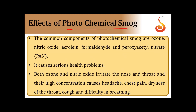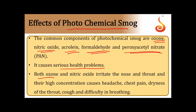The common components of photochemical smog are ozone, nitric oxide, acrolein, formaldehyde, and peroxyacetyl nitrate (PAN). It causes serious health problems: ozone and nitric oxide irritate the nose and throat, and higher concentrations cause headache, chest pain, dryness of the throat, cough, and difficulty in breathing.